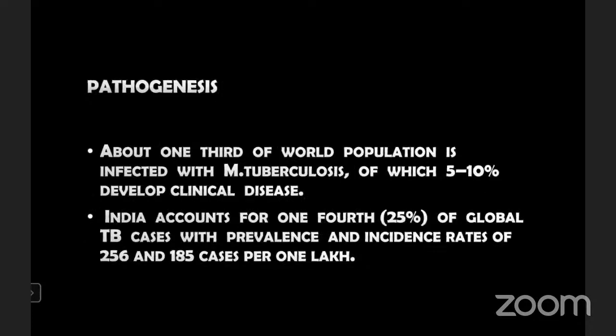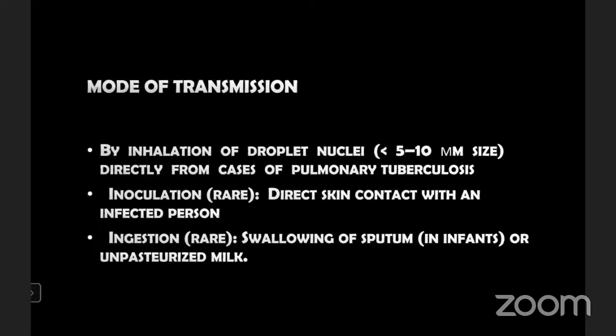Pathogenesis of mycobacterium tuberculosis: about one-third of the world population is infected with mycobacterium tuberculosis, of which only 5 to 10% will develop clinical disease. In India, about 25% of people are affected, with an incidence rate of 256 and 185 cases per 1 lakh noted. Mode of transmission is by inhalation of droplet nuclei less than 5 to 10 microns in size directly from cases of pulmonary tuberculosis. Inoculation is very rare.